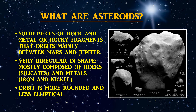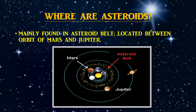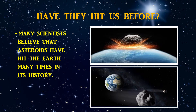Now let's go to asteroids. What are asteroids? Asteroids are solid pieces of rock and metal — rock fragments that orbit mainly between Mars and Jupiter. Their shape is very irregular, mostly composed of rocks and metals, specifically iron and nickel. The orbit is more rounded and less elliptical. Asteroids may be found in the asteroid belt, located within the orbit of Mars and Jupiter. Many scientists believe that asteroids have hit the Earth many times in its history.